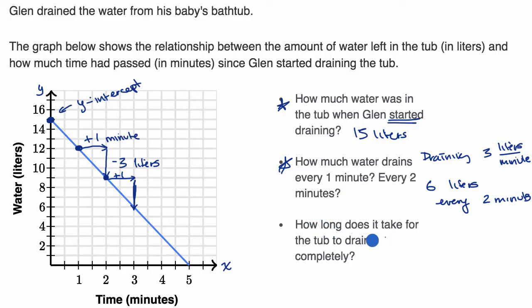And then they ask us, how long does it take for the tub to drain completely? Pause this video and see if you can answer that. Well, the situation in which the tub has drained completely, that means that there's no water left in the tub. So that means that our y-value, our water value is down at zero, and that happens on the graph right over there.